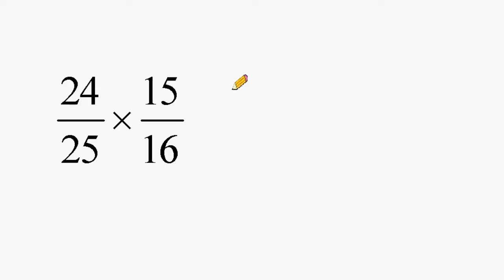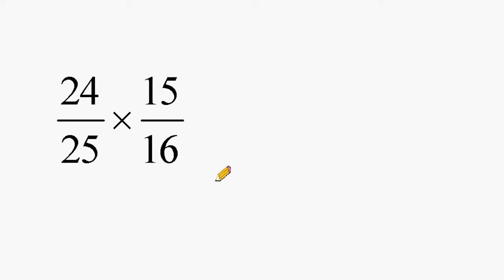Now that we have the basic premise of multiplying fractions down, we are going to multiply two fractions with larger numbers. You are often asked to express your answer in simplest form, and if we were to multiply 24 times 15 for the numerator and 25 times 16 for the denominator, we would have a lot of reducing to do. So we are going to reduce from within the problem using a process called cancellation, which makes it easier to express our answer in lowest terms. We look for a number at the top and a number at the bottom that share a common factor.